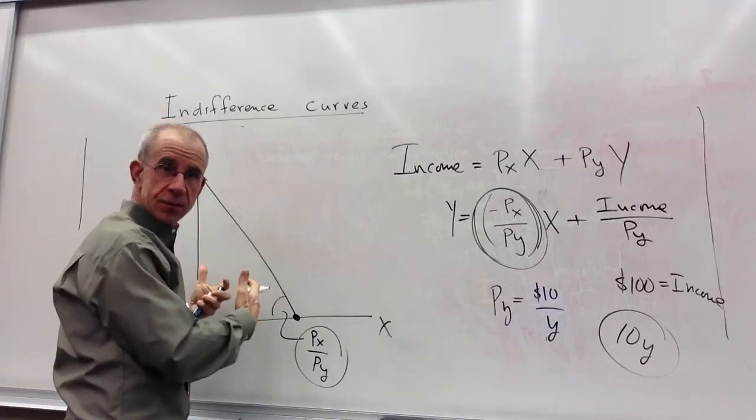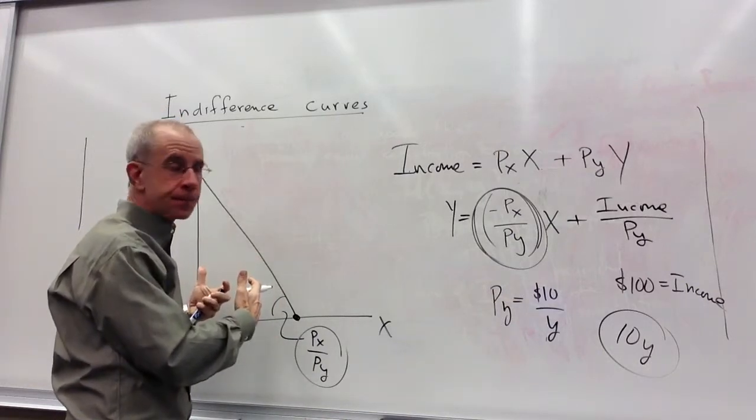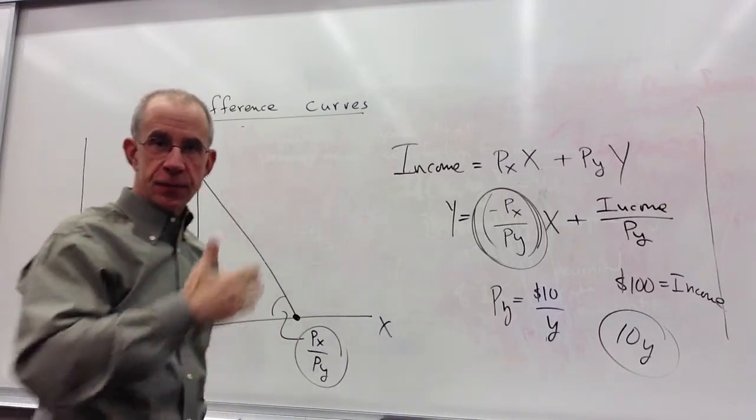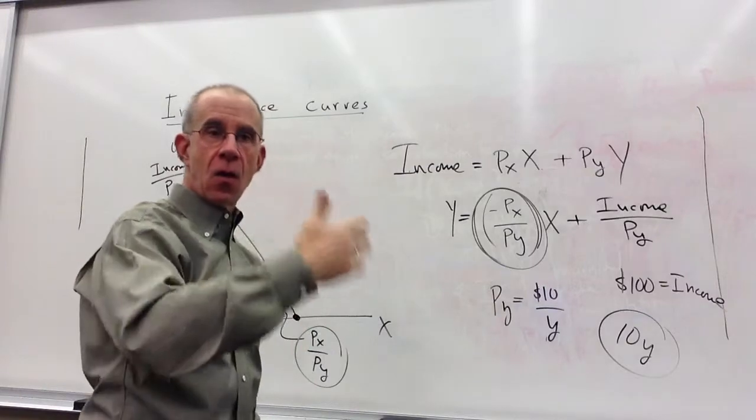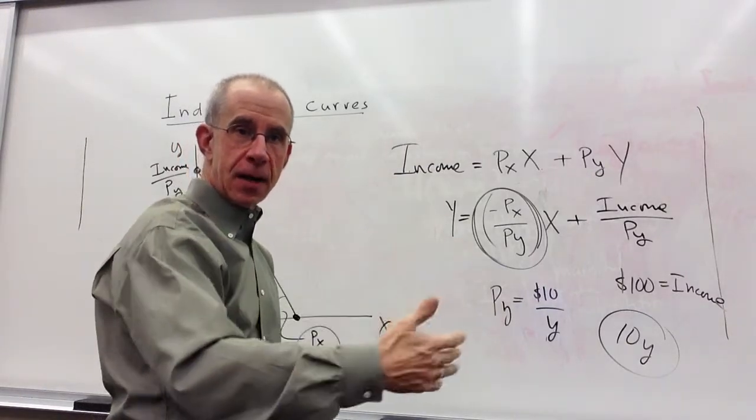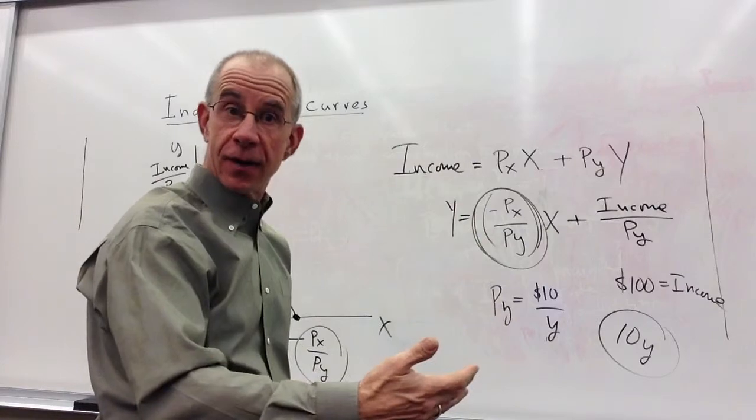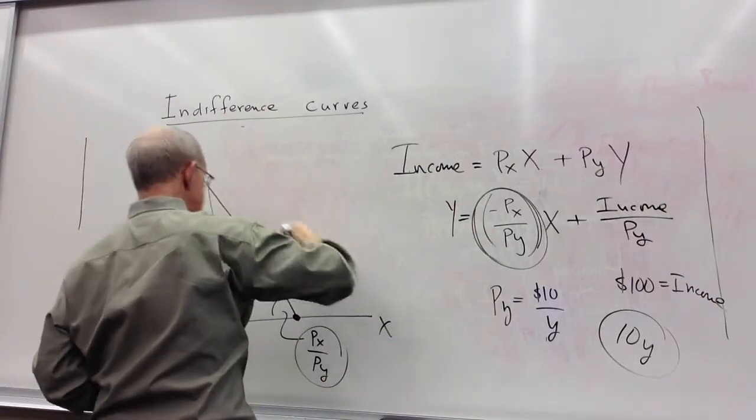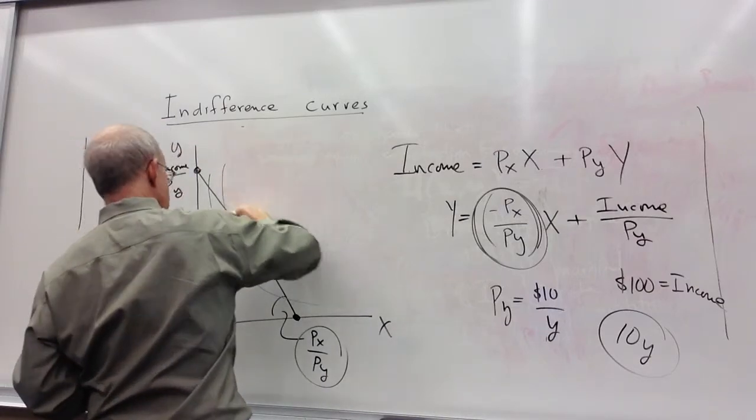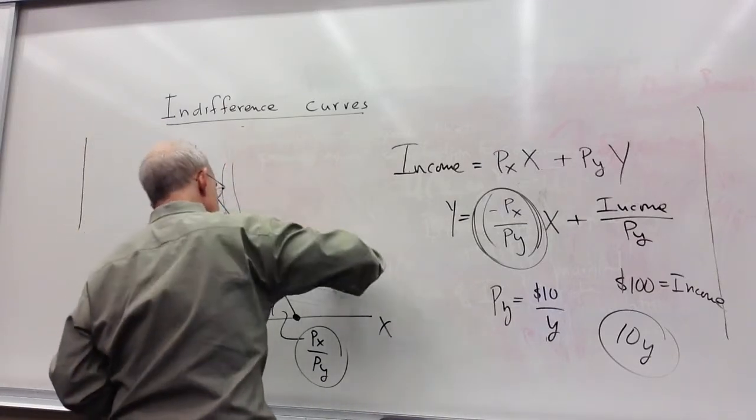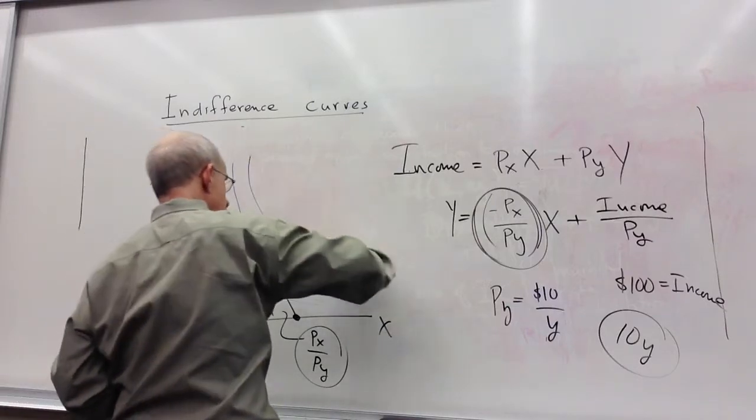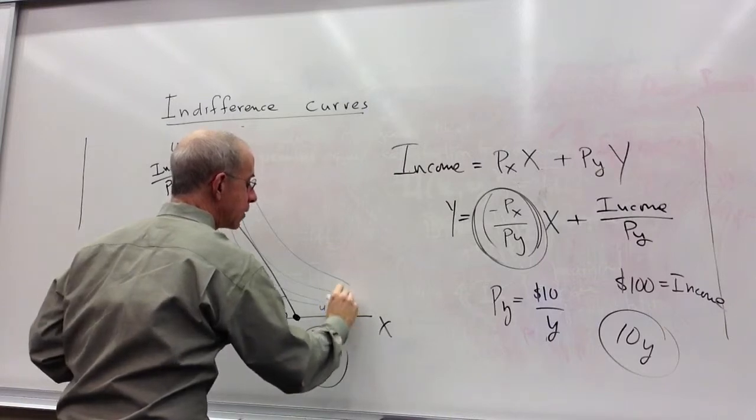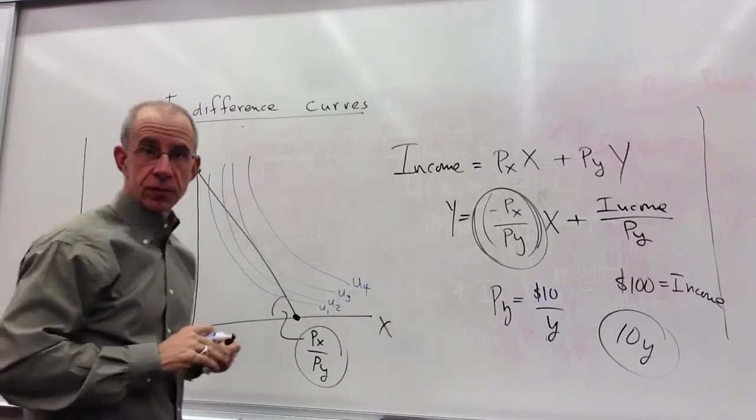Here we have the budget constraint, and let's imagine a set of indifference curves that reflect all the different possible levels of satisfaction for a consumer. We've got one indifference curve, another indifference curve, another indifference curve. Each one of these has a higher level of consumer satisfaction.